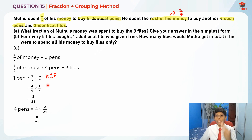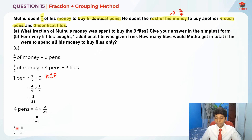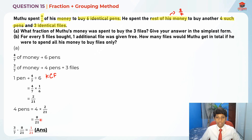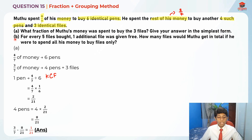To find the fraction spent on three files, we take three-sevenths minus eight-over-twenty-one, which gives us one-over-twenty-one. So one-over-twenty-one is the fraction of Muthu's money spent on three files, and it is already in its simplest form. That completes part A.